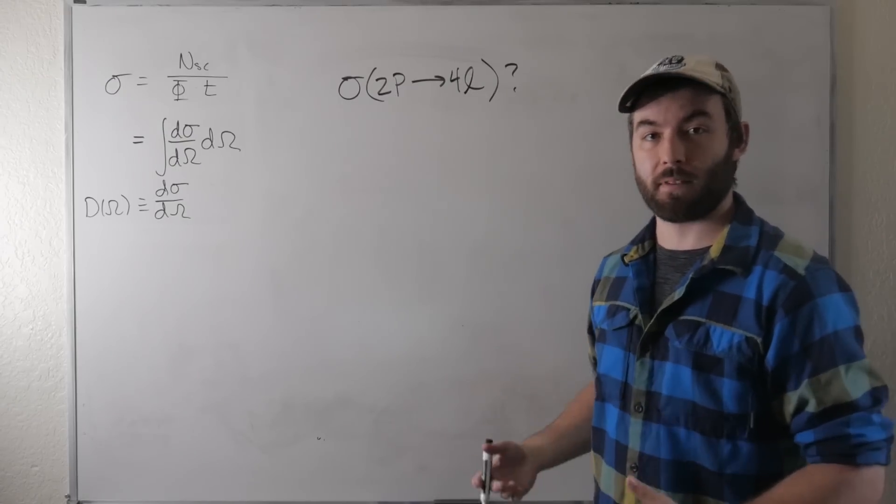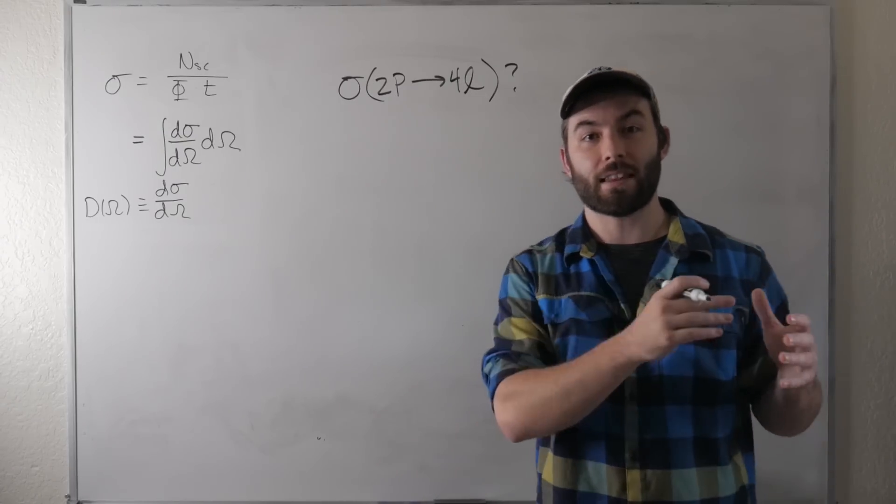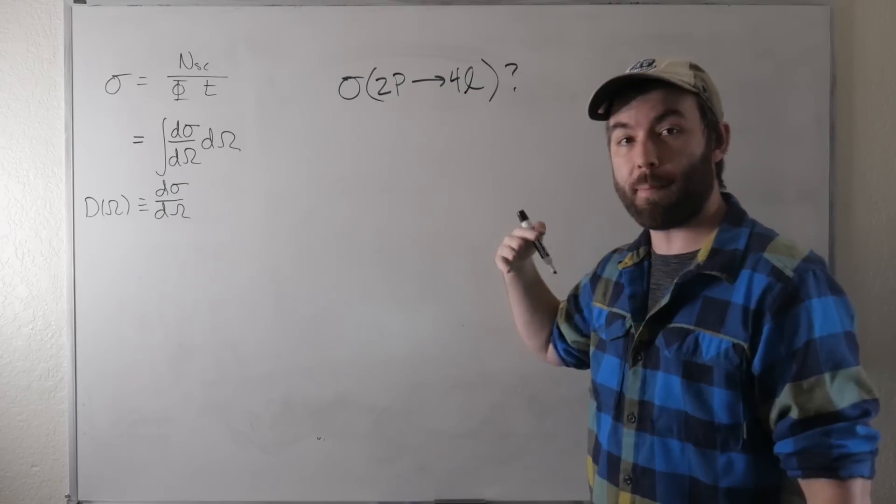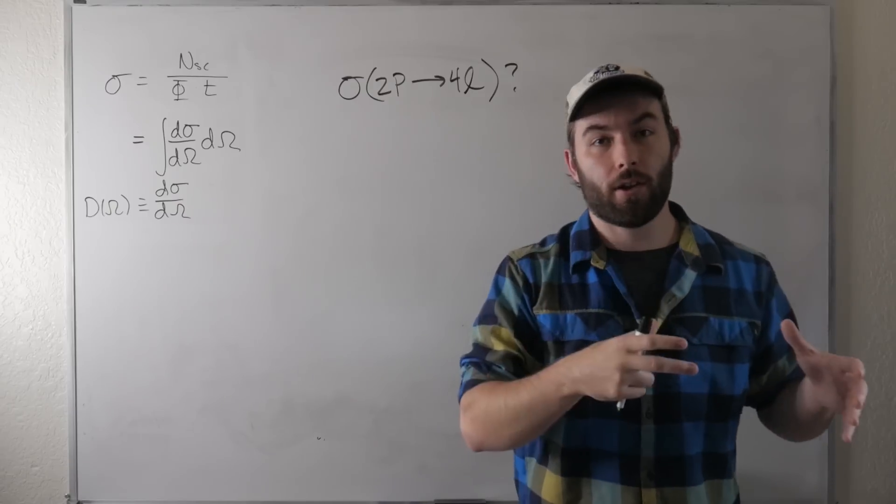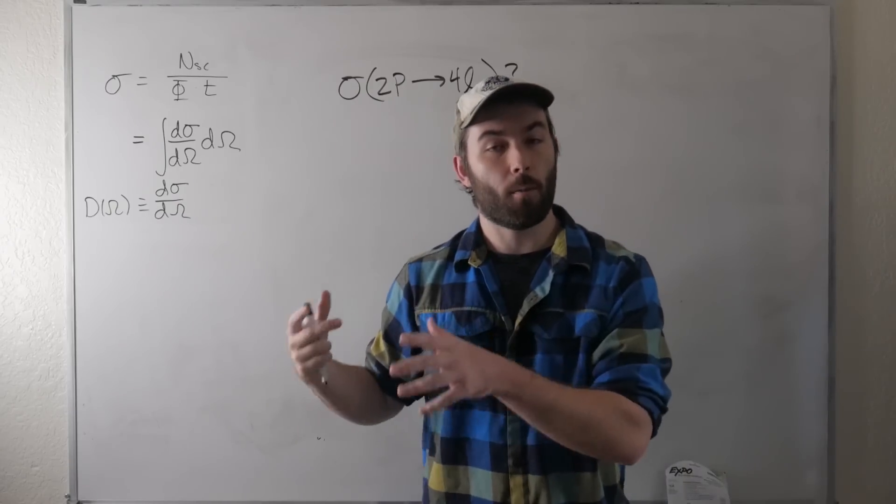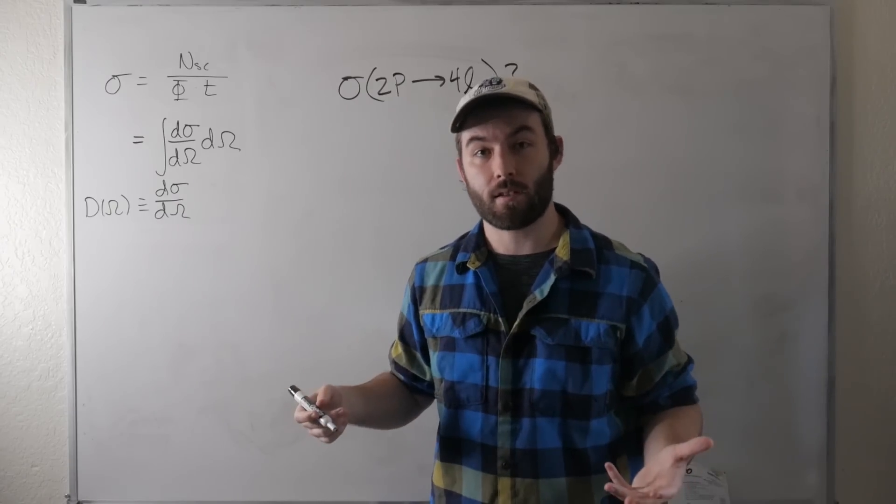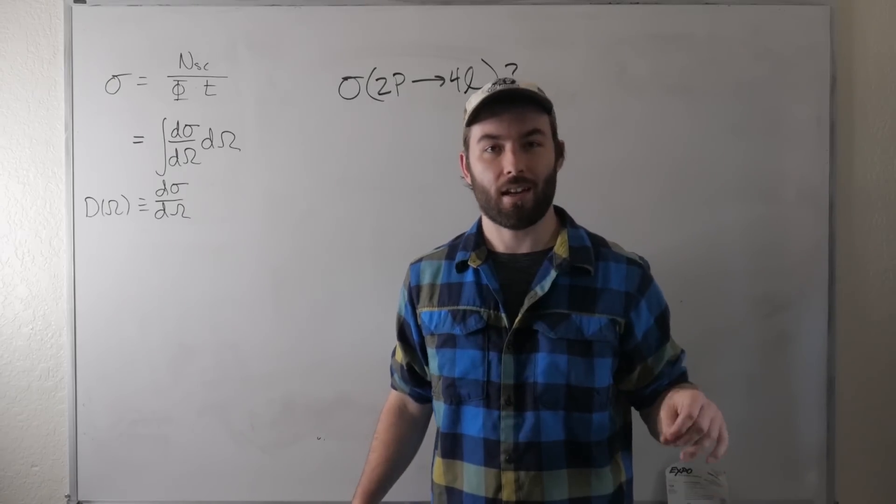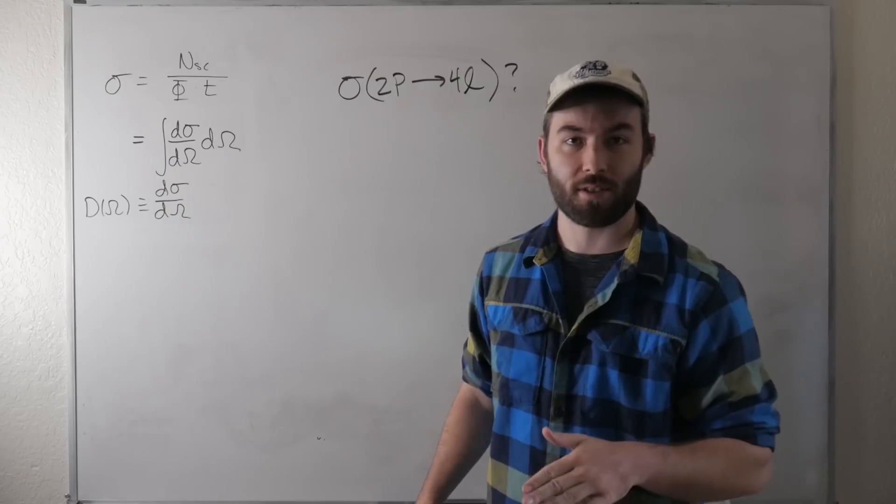If I were to specify this in terms of kinematic variables, then we're specifying the differential cross-section. I could say, what's the probability of measuring the four leptons within this range of solid angle or within this range of energy and momentum? That would be specifying the differential cross-section. But these things aren't Lorentz invariant. They depend on your reference frame. So a nice one to express this stuff in terms of is what's called the invariant mass.